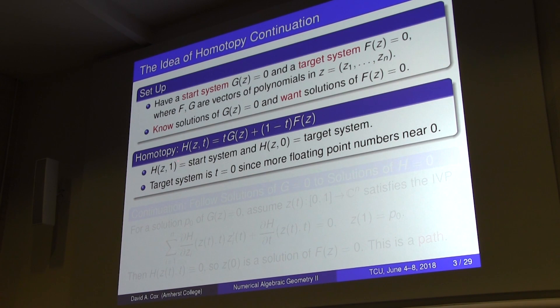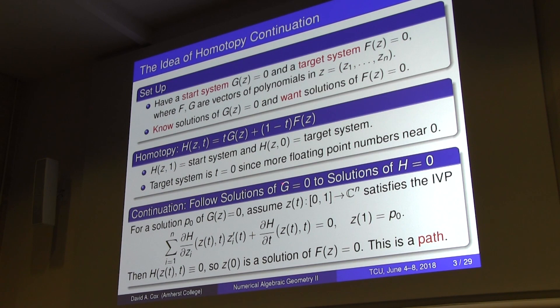The idea is: how do I actually follow a solution from the start system to the target system? I take a solution of the start system, take a path over the interval zero to one, and I want to satisfy an initial value problem — a system of ODEs.